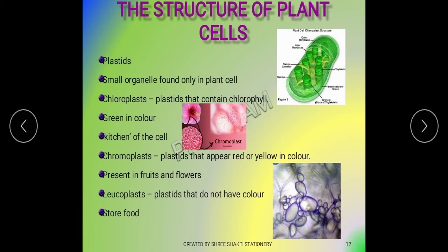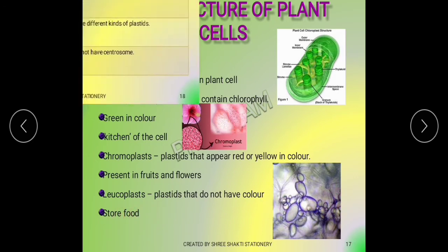There is another type called leucoplast. Leucoplasts are plastids that do not have color. Since they have no color, they are used to store food.